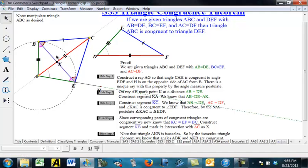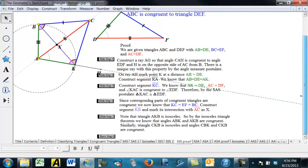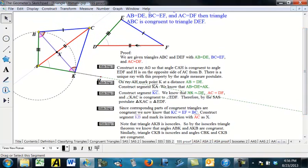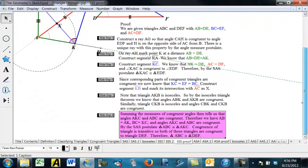And so those two triangles are congruent by the side angle side postulate, which tells us that triangle ABC is congruent to triangle AKC. But AKC was congruent to DEF. So therefore, the two original triangles are congruent to each other. And we have proved the theorem.